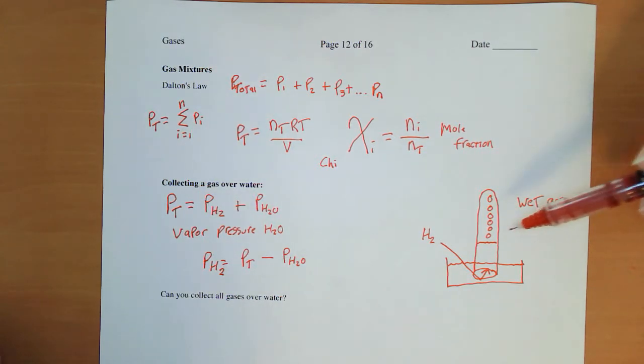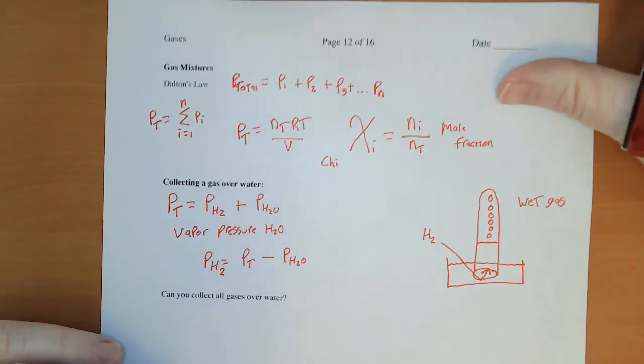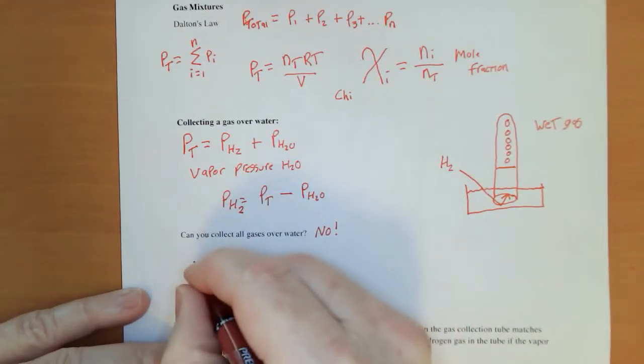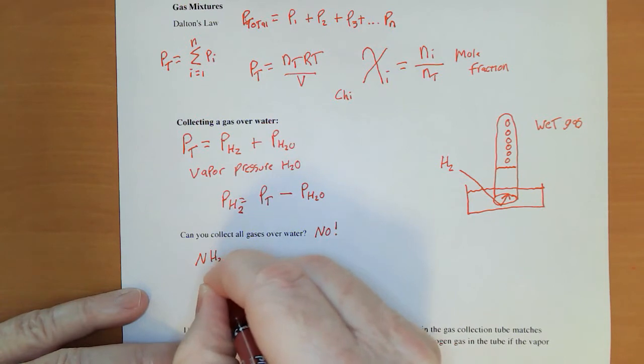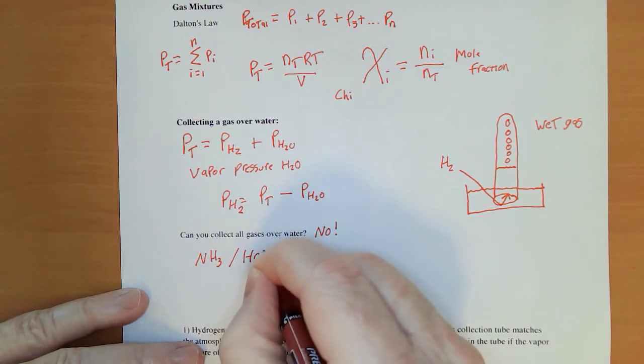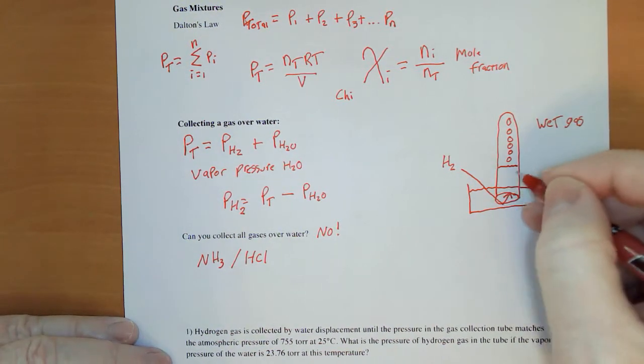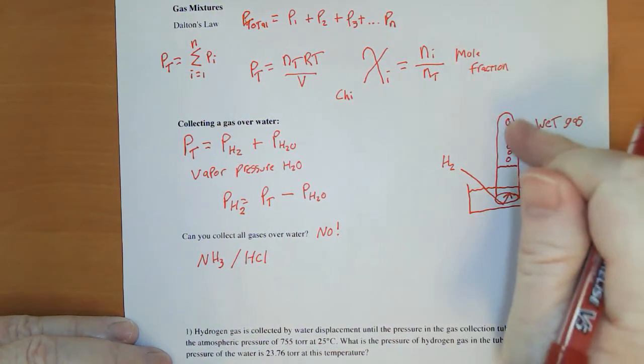Now you did collect gases in the past over water, which is kind of cool. You did nitrogen and oxygen and hydrogen, carbon dioxide. But you can't collect all gases over water. Two that come to mind immediately for me are ammonia and HCl, both of which are very, very water soluble.